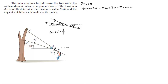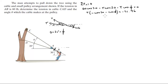Rearranging: tension times (negative cosine of 20 minus cosine of phi) equals negative 51.96, which means the tension equals 51.96 divided by (cosine of 20 plus cosine of phi). This is our first equation.